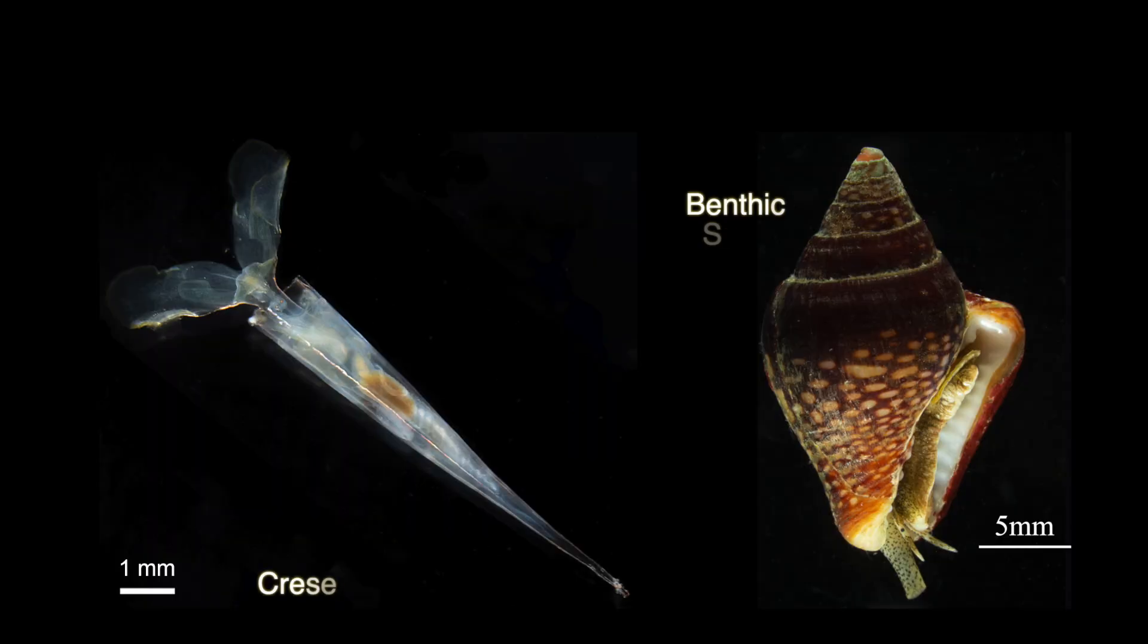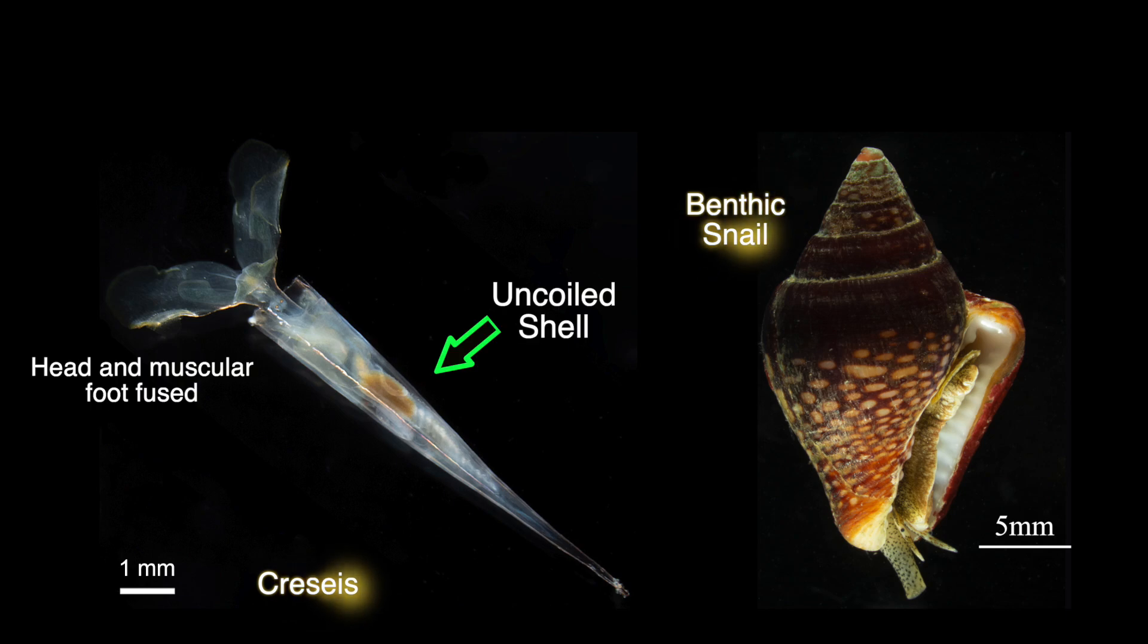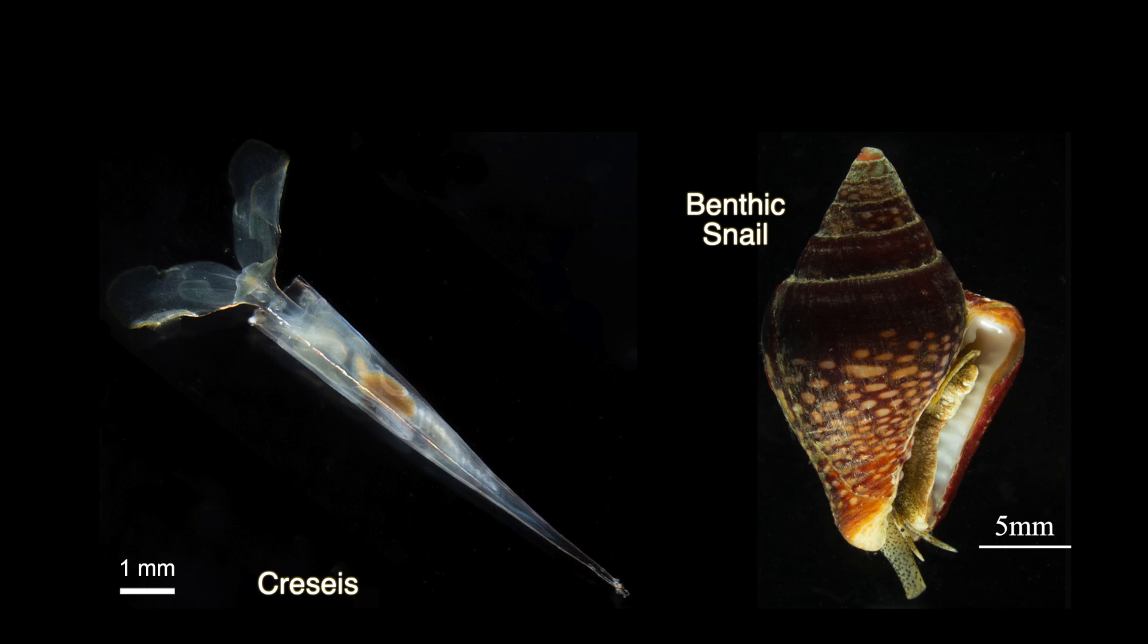If we compare these Cresseids with benthic snails, we can see that they don't look similar. But this is because Cresseids have evolved an uncoiled shell and fused their head with their muscular foot, forming the wings that allow them to swim through the water column.